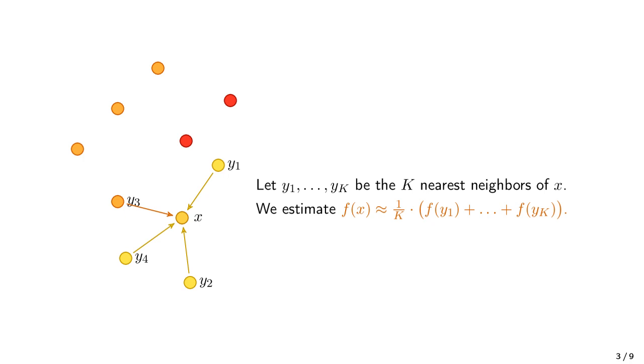Still, there are two problems with this estimation approach. First, it seems kind of arbitrary whether we consider 1, 2, 3, 4, or any other number of nearest neighbors. Second, we should take into account that some of these nearest neighbors are closer than others, and it would be reasonable to say that the closest neighbor should probably have more influence on our estimate than a neighbor that is further away.